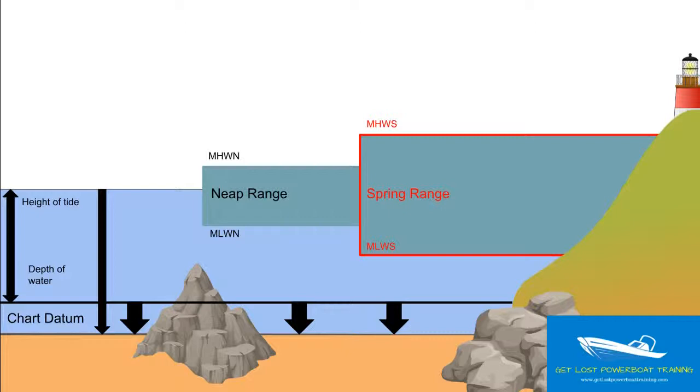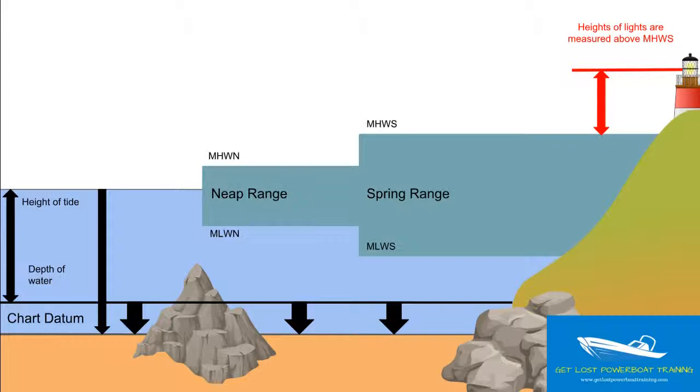Then we come to our lighthouse. The height of light is measured above something called mean high-water springs, which, as we said earlier, is the average height of high water on a spring tide.